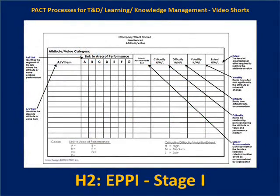We can capture the enablers of the process and performance views in various categories. This format helps us capture the target audience's attributes and values — physical, psychological, and intellectual attributes, and what values are important in the current state. Later, a future state view is created and compared: what from the old must be retained, what won't be needed at all, and what new things will be needed in the future state that weren't needed before.